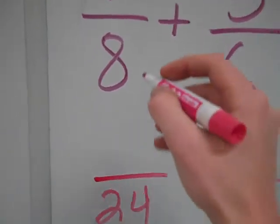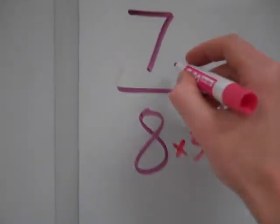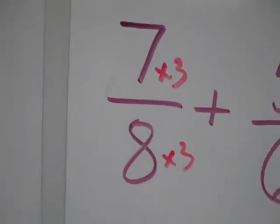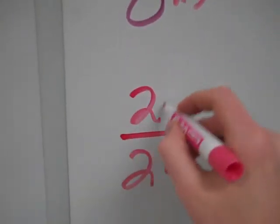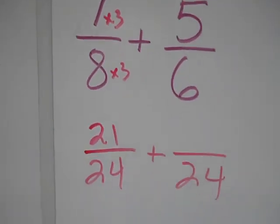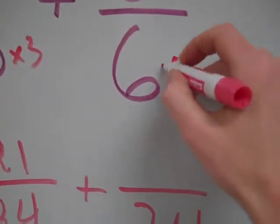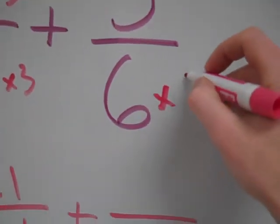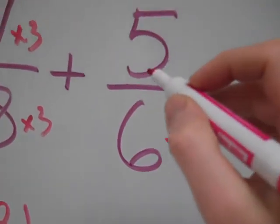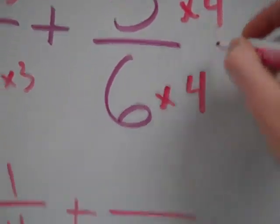And then in order to make 8 into 24, I have to do times 3. So the numerator is going to be 7 times 3, which is 21, 24ths. And then 6 has to be times by 4 in order to get to 24. And then, so 5 times 4 is going to be 20.